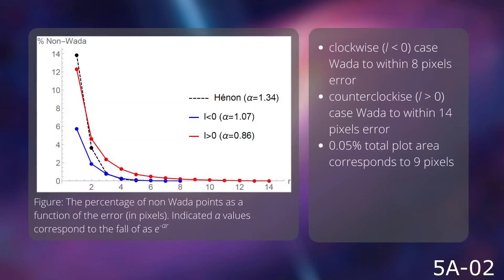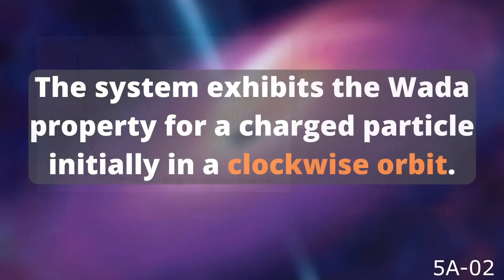We also apply the merging method to another system that is known to be Wada, the Hénon map. We see that the boundaries of the clockwise orbit case and the Hénon map stay the same to within 8 pixels, while the counterclockwise orbit case stay the same to within 14 pixels, which is greater than our threshold. We conclude that the system is Wada, but only in the clockwise orbit case.